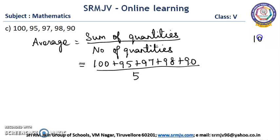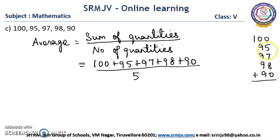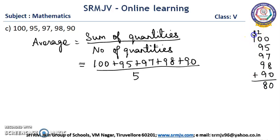Now we have to add the given numbers: 100 plus 95 plus 97 plus 98 plus 90. Here: 8 plus 7 is 15, 15 plus 5 is 20, 0 here with 2 carry over. Then 2 plus 0 is 2, 2 plus 9 is 11, 11 plus 9 is 20, 20 plus 9 is 29, 29 plus 9 is 38. 8 here with 3 carry over. 3 plus 1 is 4. So we got 480.